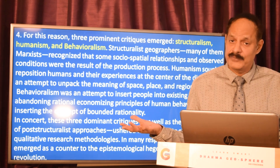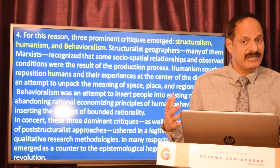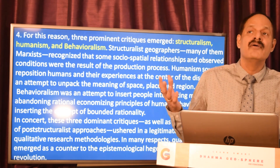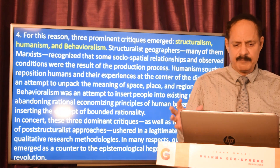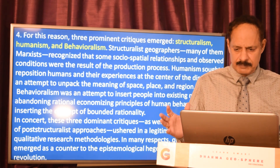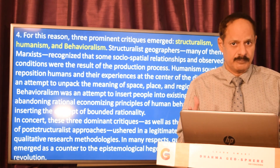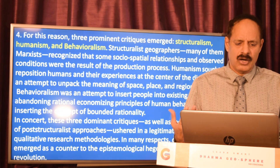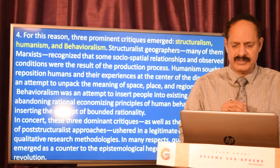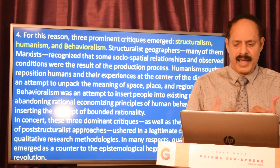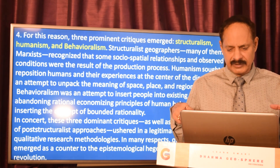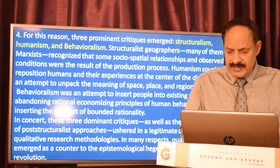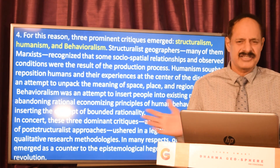Three prominent critiques emerged: humanistic geography, behavioral geography, and structural geography. Structural geographers, many under the influence of Marxism, recognized that spatial relations and conditions were the result of the production — essentially the profit — process. Humanism sought to reposition humans and their experience at the center of the discipline, to unpack the meaning of the triad of space, place, and region.